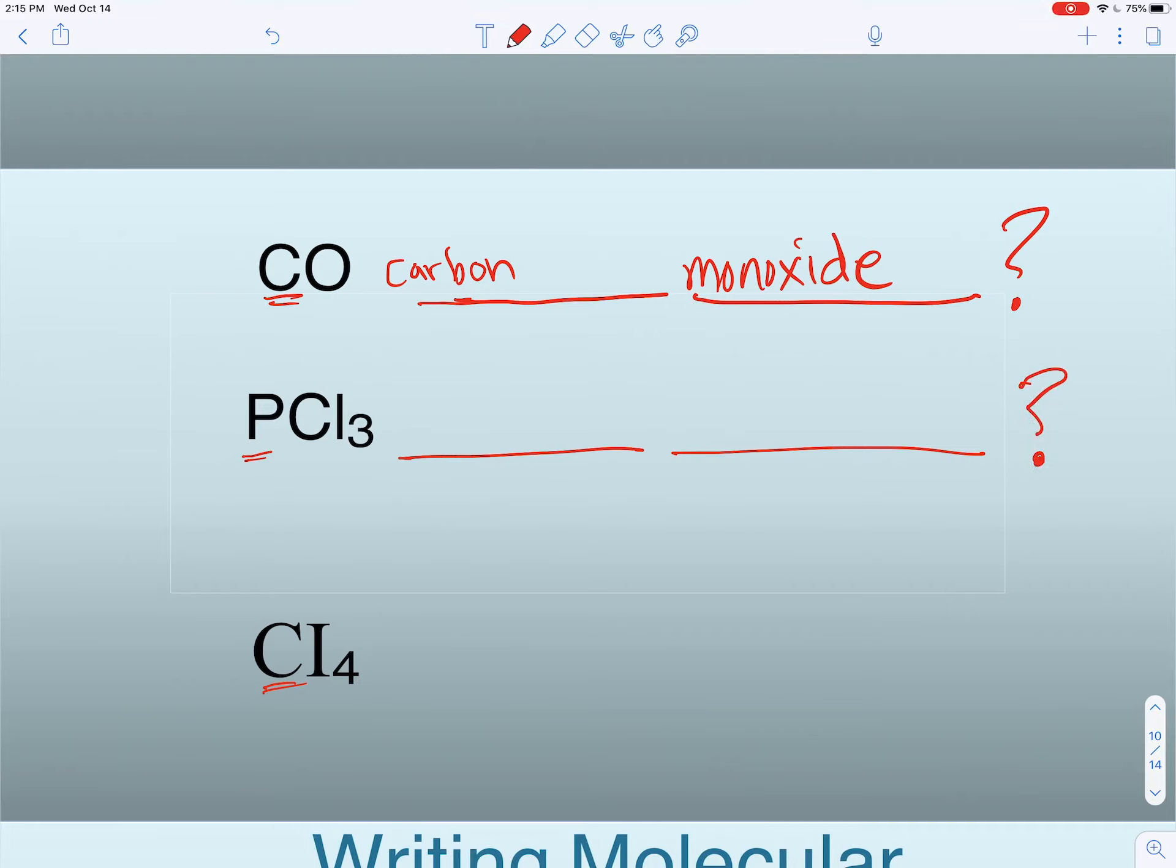How about you try the second one? What do you think the answer here is for PCl3? Phosphorus and then the prefix for chlorine is going to be tri because there's three of them. Phosphorus trichloride. Make sure you remember to turn it into an ide ending.